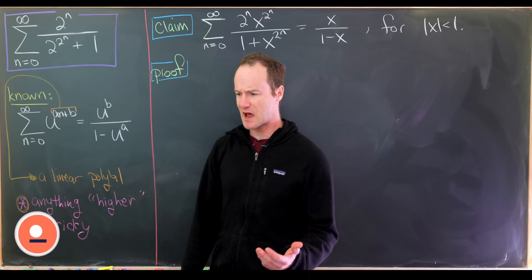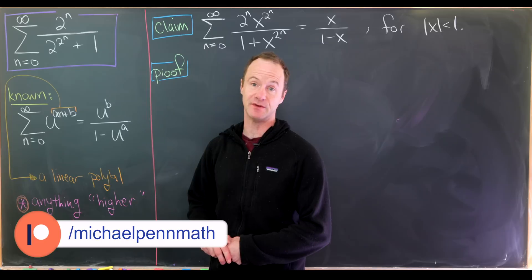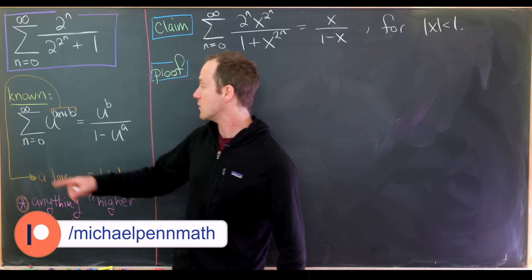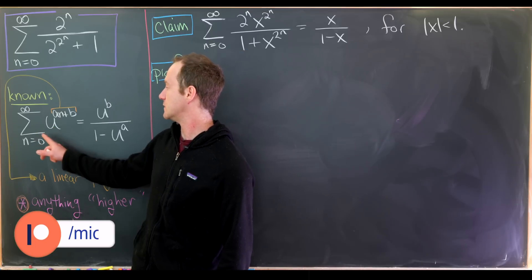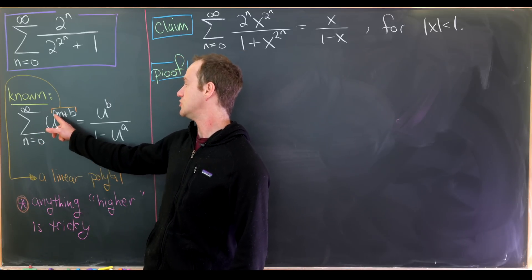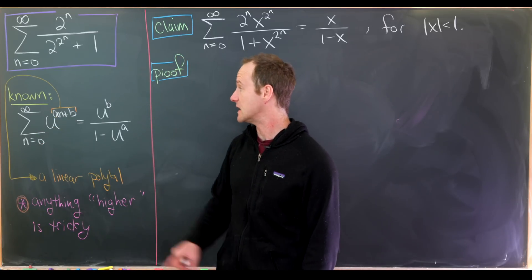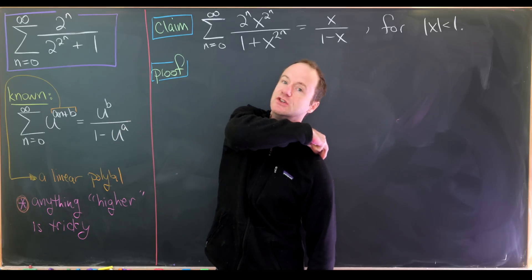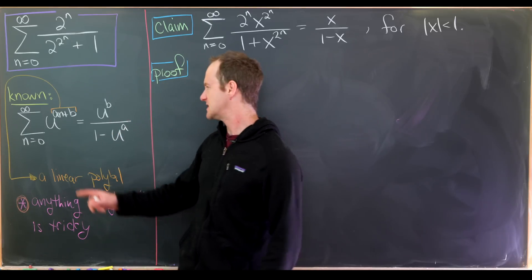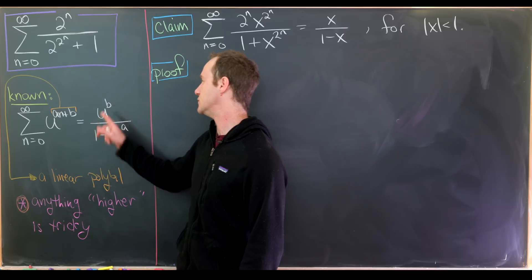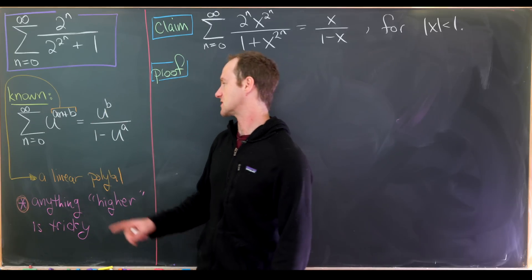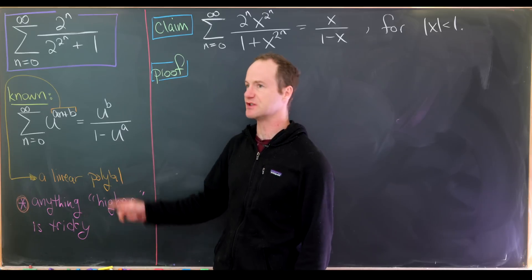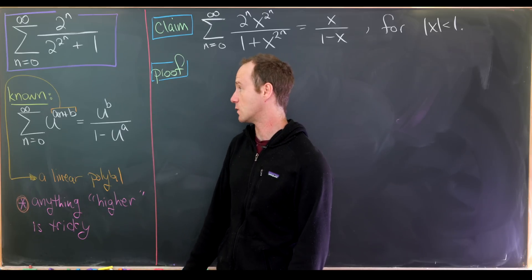Via the theory of geometric series, which we use all the time on the channel, we know that the sum as n goes from 0 to infinity of u to the an plus b is equal to u to the b over 1 minus u to the a. That's because this has a starting term of u to the b and a common ratio of u to the a, and of course this only converges when the absolute value of u is less than 1.